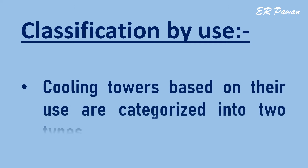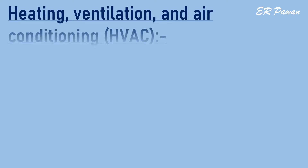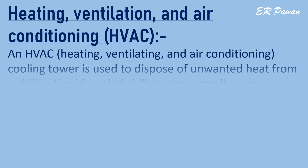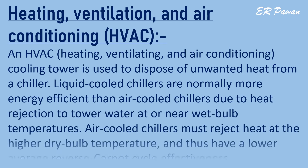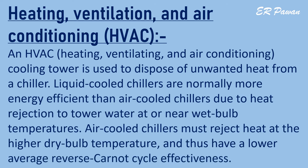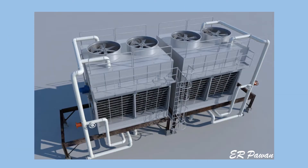Cooling towers based on their use are categorized into two types. HVAC — heating, ventilating, and air conditioning — cooling towers are used to dispose of unwanted heat from a chiller. Liquid-cooled chillers are normally more energy efficient than air-cooled chillers due to heat rejection to tower water at or near wet bulb temperatures. Air-cooled chillers must reject heat at the higher dry bulb temperature and thus have a lower average reverse Carnot cycle effectiveness.